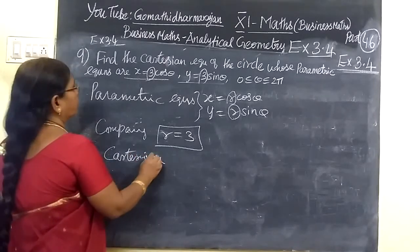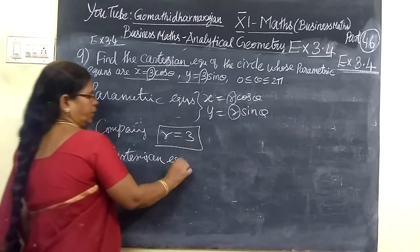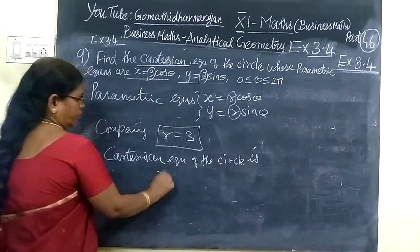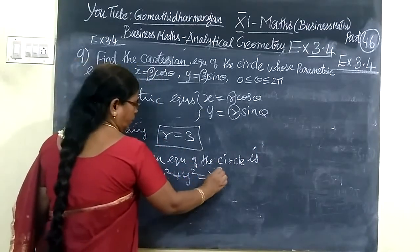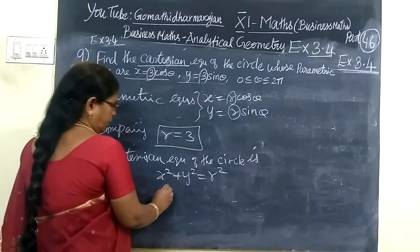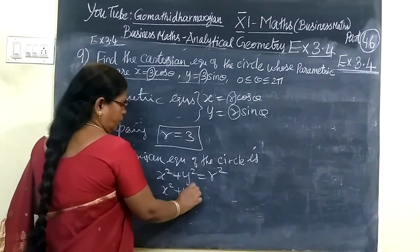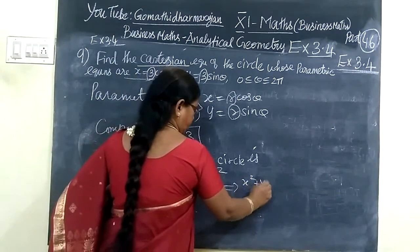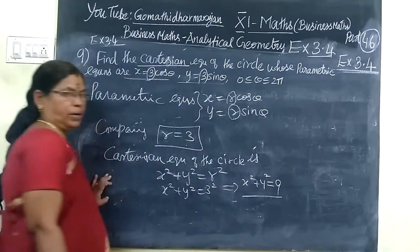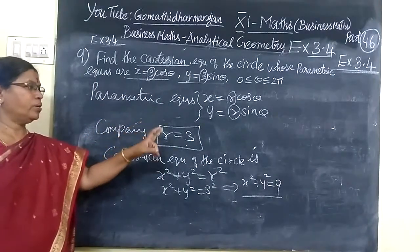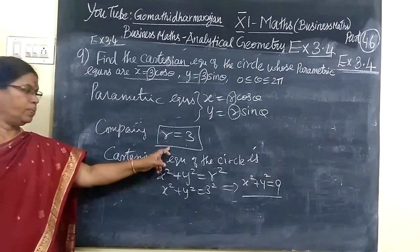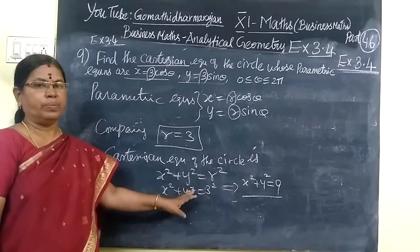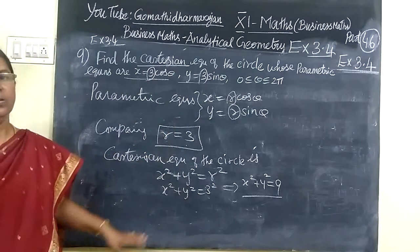Parametric equation of circle. X squared plus Y squared equal to r squared. Then there is the origin. X squared plus Y squared equal to 3 squared. X squared plus Y squared equal to 9. X equals r cos theta, Y equals r sin theta. R squared is the Cartesian equation. Parametric equation is r = 3.